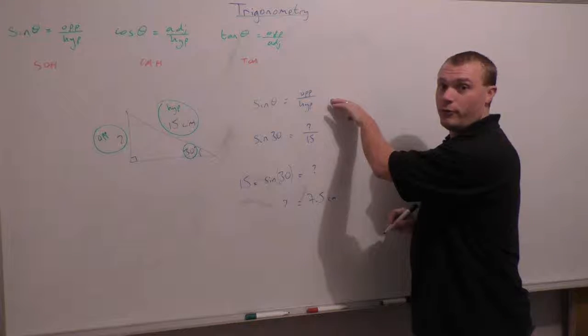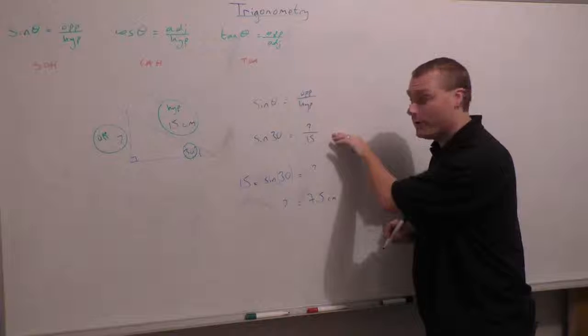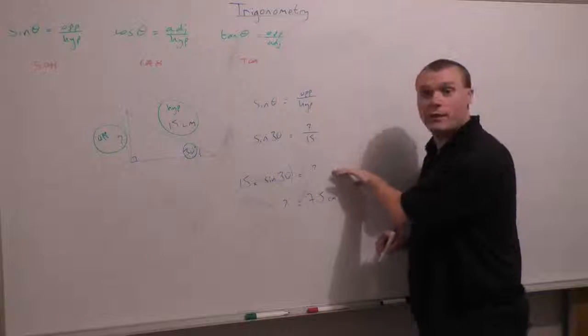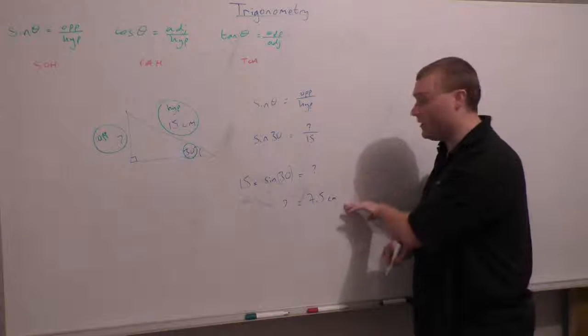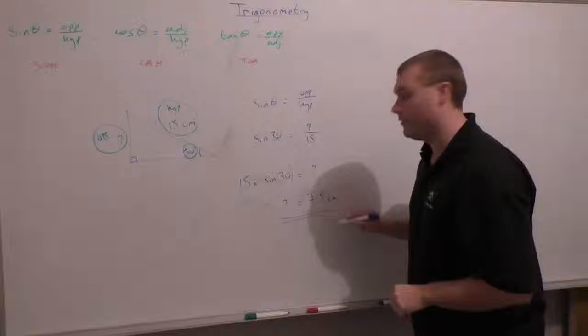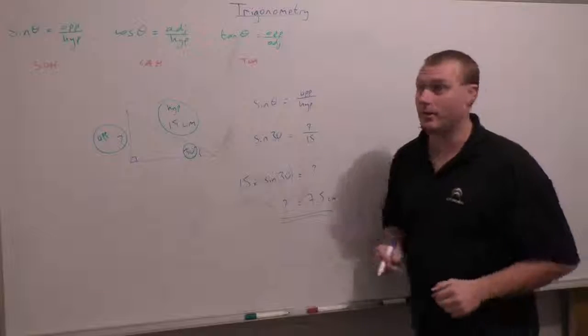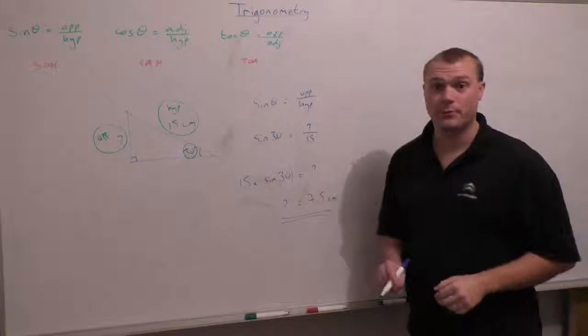So you start with the formula, you put the values in that you know, you do any rearranging you need to do, and you end with the answer. I like to double underline it, and that's how we'd work it out.